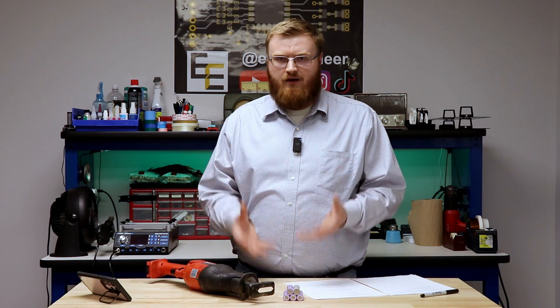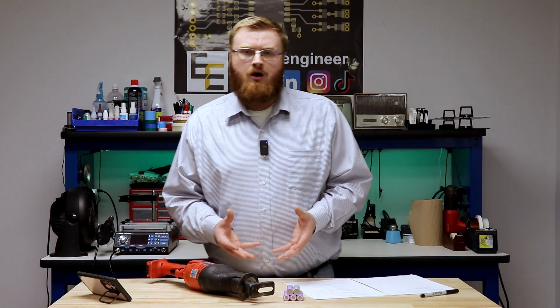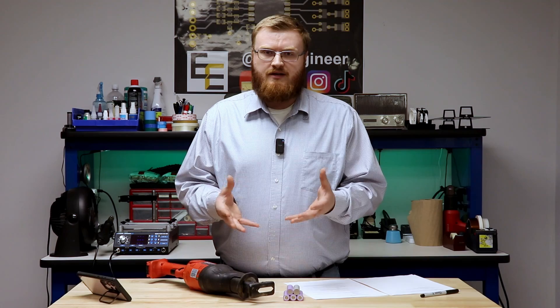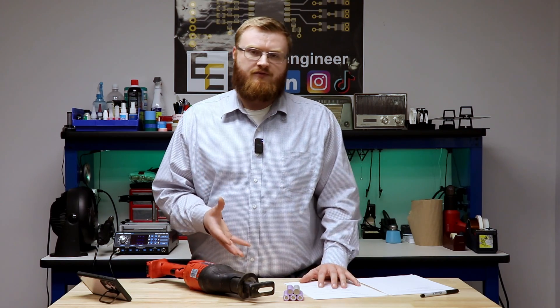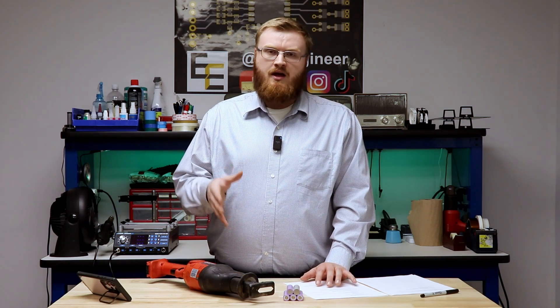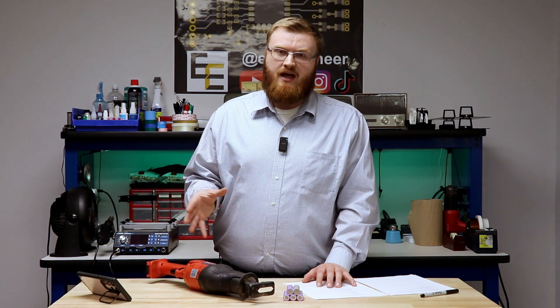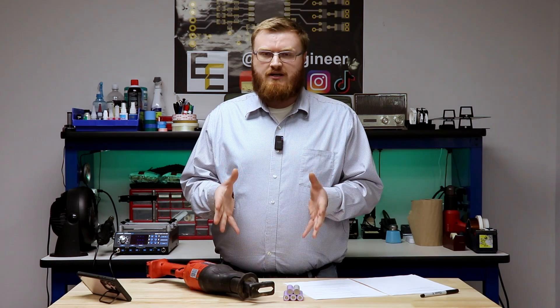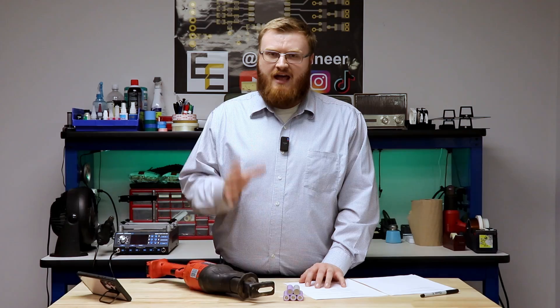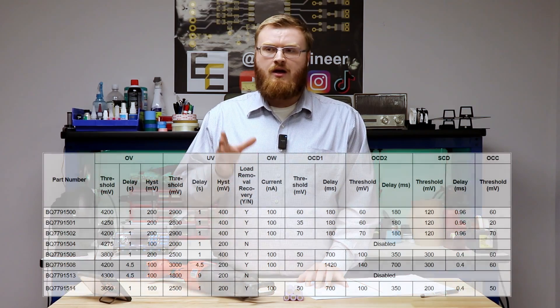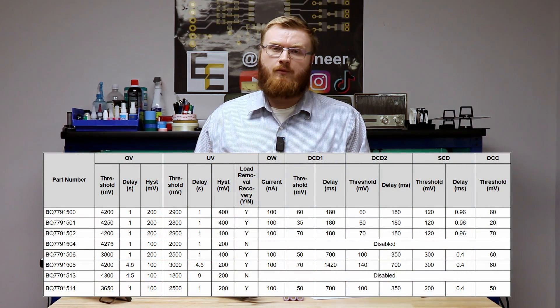Now when you go to pick one of these chipsets, you have to pick a series and then a skew of that chipset. So if we look at the data sheet for the BQ77915, which is the chip that we will be using in this application, we see the data sheet like normal, but if you scroll down through the data sheet, you'll see a table. And the table has several skews of the same chip on that table.